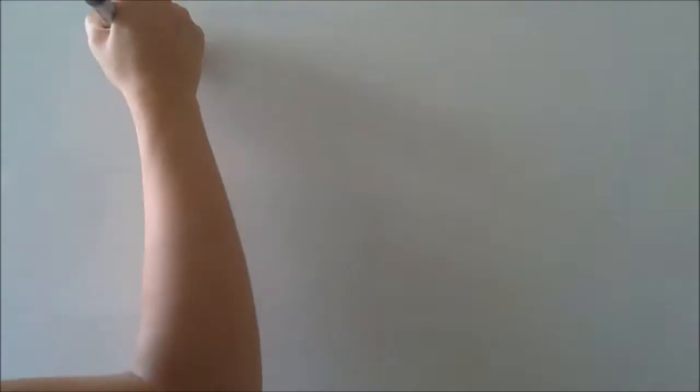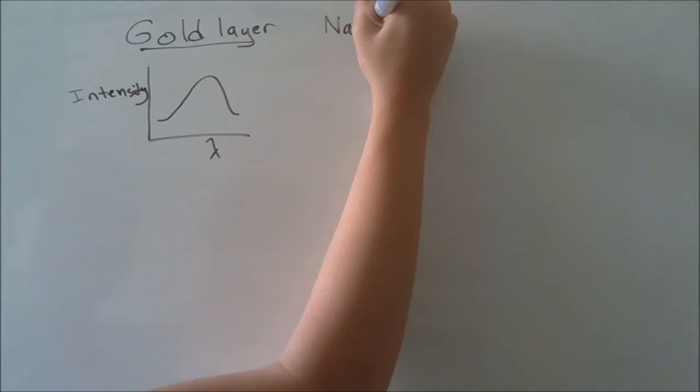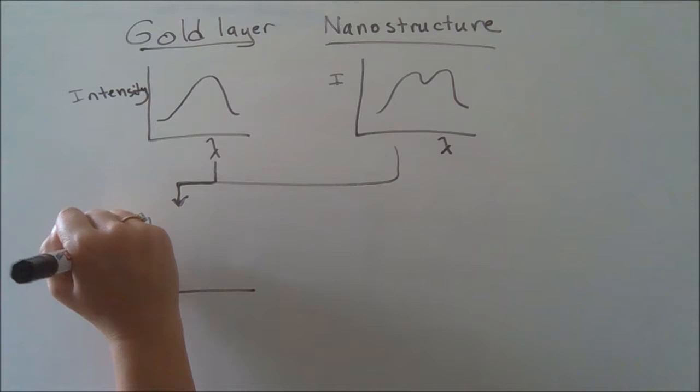The two curves were then normalized to determine the effect of the nanostructure on the transmission of the gold. This is what allowed us to observe a plasmonic effect because a dip in transmission corresponding to a peak in absorption indicates the structure's plasmon resonance frequency.